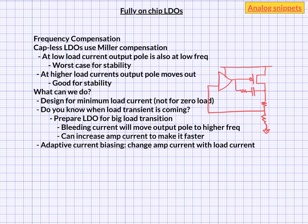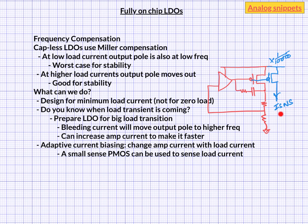Adaptive current biasing can be used even if you don't know the timing of your load current transients. You already have that information because the current flowing into your power PMOS is your load current, more or less. You can easily sense this load current using a sense transistor, which is typically much smaller than your main power transistor. We can feed this sense current back to the amplifier bias. So the output pole moves because the load current changes, and the input pole moves because of the adaptive current biasing.